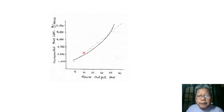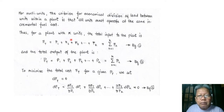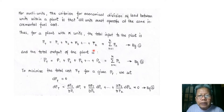Sometimes the incremental cost is represented by a straight line for simplicity. For multiple units, the criterion for economical division of load between units within a plant is that all units must operate at the same incremental fuel cost. Thus for a plant with k number of units, the total input or total cost is: F_T = f1 + f2 + f3 + ... + fk, which is the summation of f_n from n=1 to k.